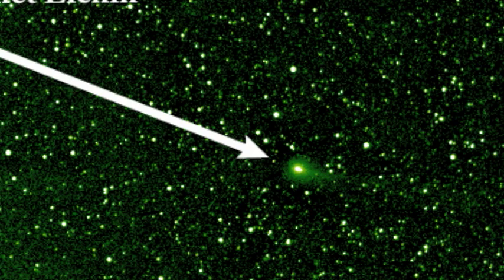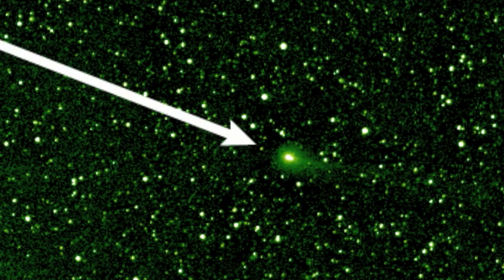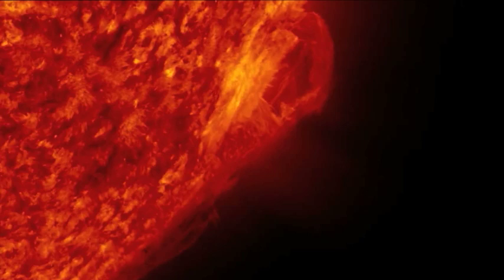In the summer of 2011, Elenin grew brighter than expected and astronomers began to anticipate a respectable show. But the situation changed when a powerful coronal mass ejection erupted from the Sun.